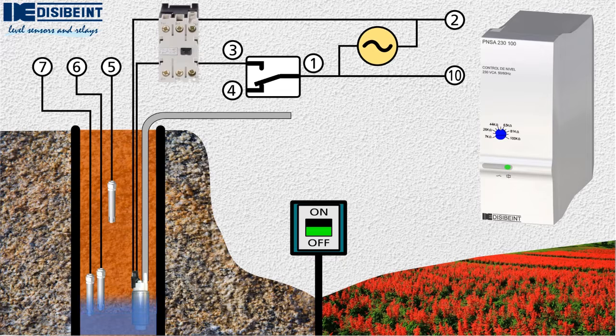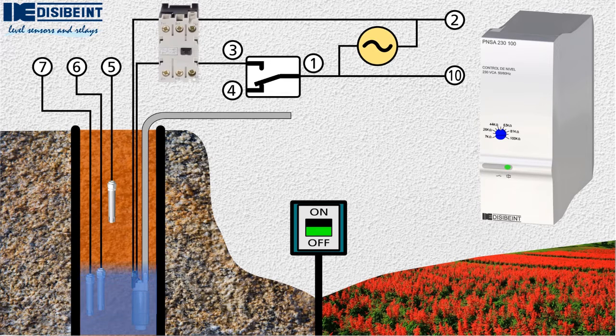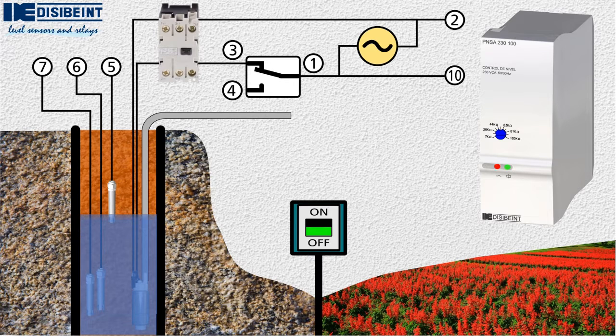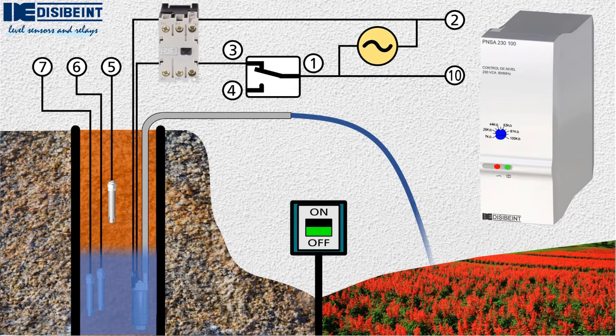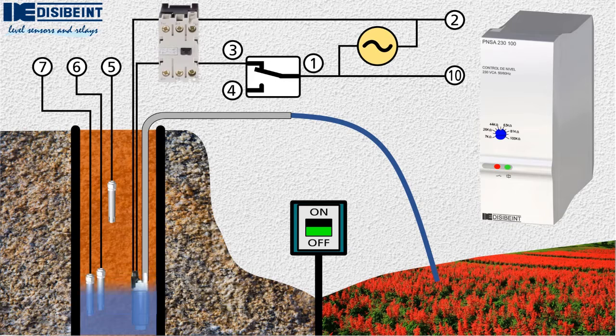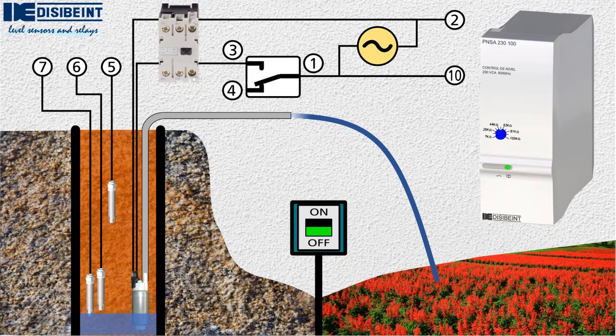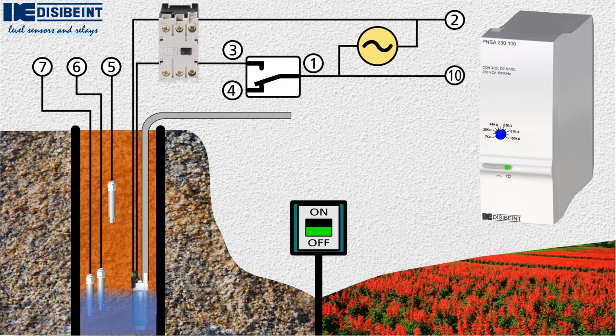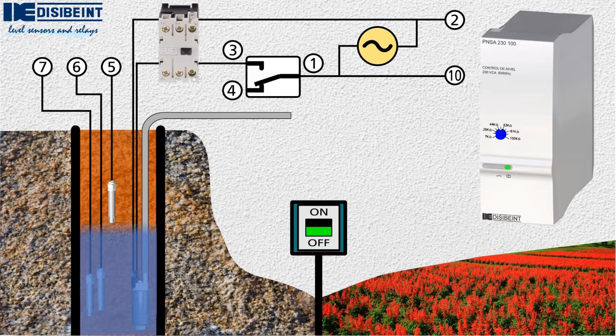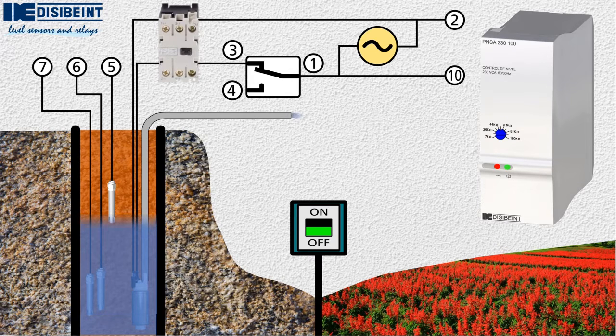If the power supply to the system is not cut off, the irrigation will restart when the water level reaches the maximum probe, repeating this cycle uninterruptedly until we act on the general switch. This will happen whenever the flow ejected by the pump is greater than the flow with which the well is naturally filled.